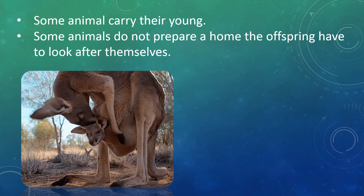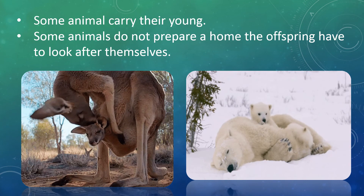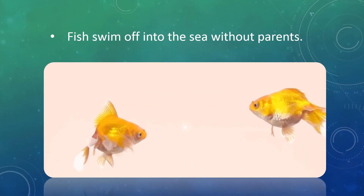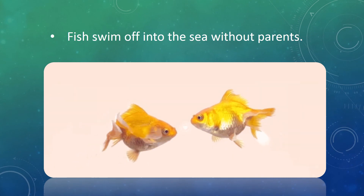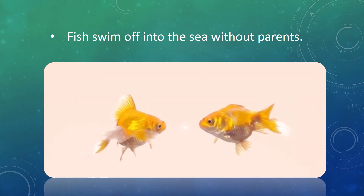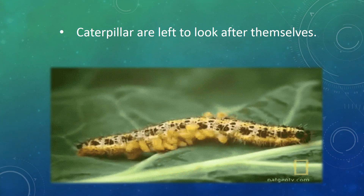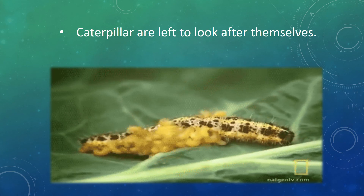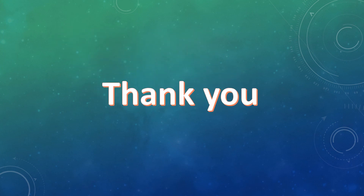Some animals do not prepare a home, and the offspring have to look after themselves. For example, a fish swims off into the sea without parents, and caterpillars are left to look after themselves. That covers what we mean by movement and reproduction. Thank you.